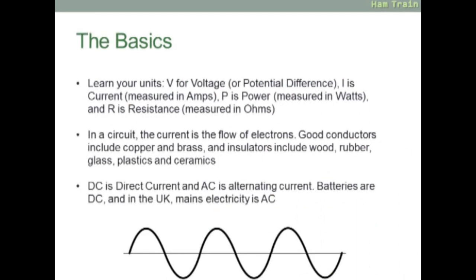Let's look now at technical basics. For the foundation exam, you're expected to learn your units: V for voltage, sometimes referred to as potential difference; I for current measured in amps; P for power measured in watts; and R for resistance measured in ohms. In a circuit, the current is the flow of electrons. Good conductors include copper and brass, while insulators include wood, rubber, glass, plastics, and ceramics. You also need to know the difference between DC direct current and AC alternating current.